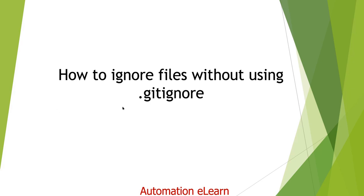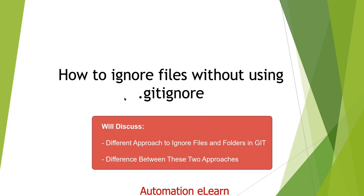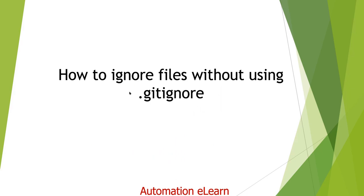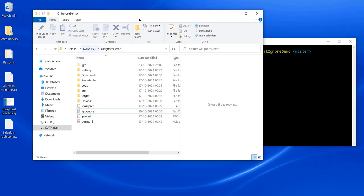Based on that, there is one tricky interview question that people generally ask: in Git, I want to ignore files and folders without using a gitignore file. As of now we have seen using the gitignore file to ignore files, but the question is — without using gitignore, how can we ignore files and folders in Git? Let's see practically what the problem statement is.